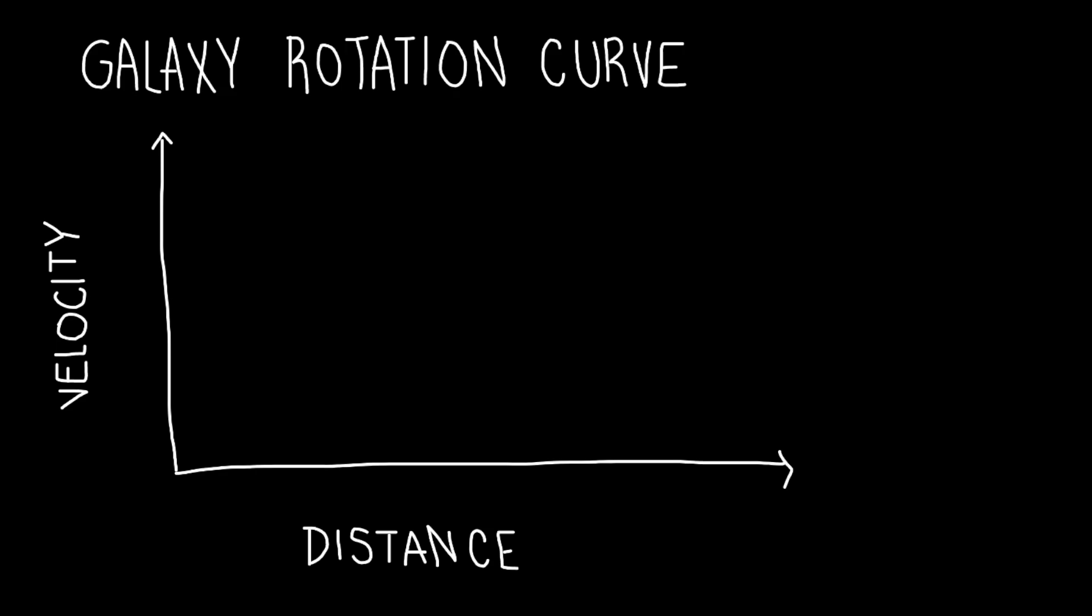What would we expect this relationship to look like? According to Newtonian mechanics, v, the velocity, is equal to the square root of GM over r. This comes from equating centripetal force to gravitational force.